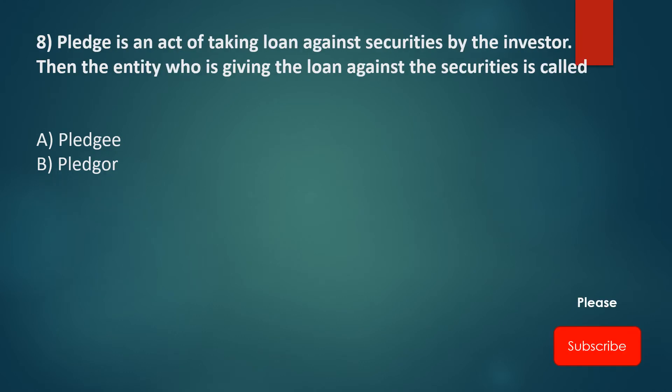Pledge is an act of taking a loan against securities by the investor. The entity who is giving the loan against securities is called — Option A: Pledgee, Option B: Pledger. The correct answer is Option A: Pledgee.